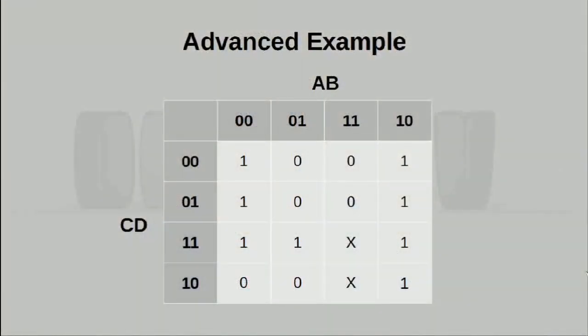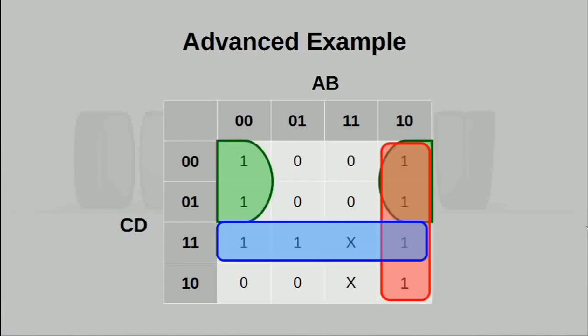Okay, so this is our more advanced example, including several don't care values over here. Let's make our selections here. As you can see, I have chosen to group these 4 values together. There is a long vertical piece of 4 inputs here, as well as another long horizontal piece, which includes a don't care value.